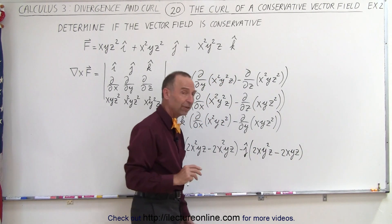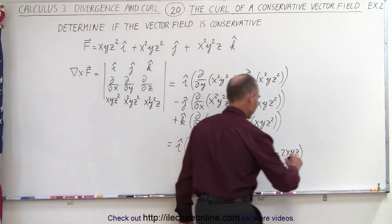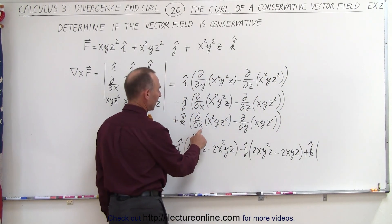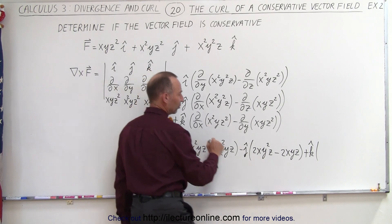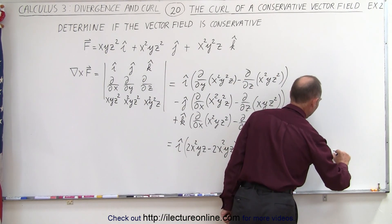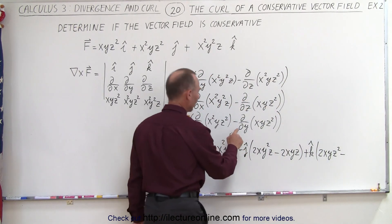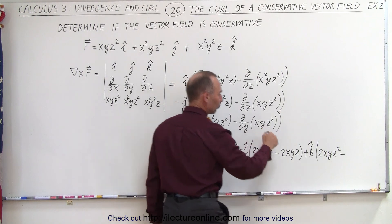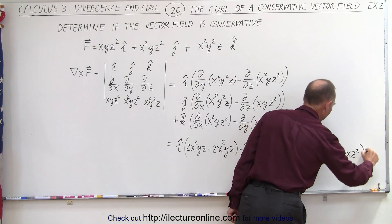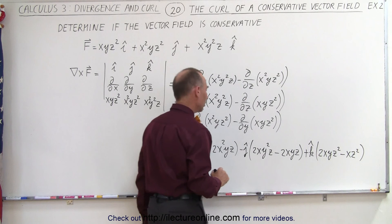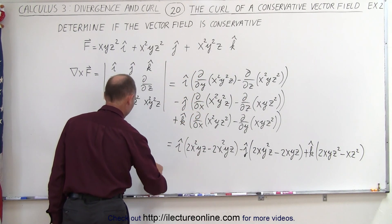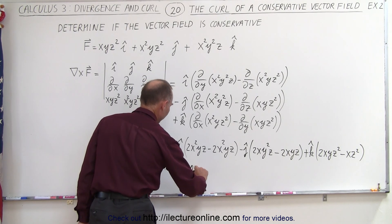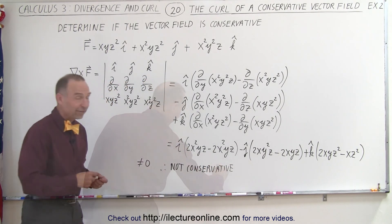So this is definitely not conservative. But let's go ahead and work out the third term. Plus in the k direction: with respect to x that's 2xyz², minus the derivative with respect to y, which is xz². This also does not go to zero. Therefore the curl is not equal to zero, and therefore it is not a conservative vector field. And that's how it's done.